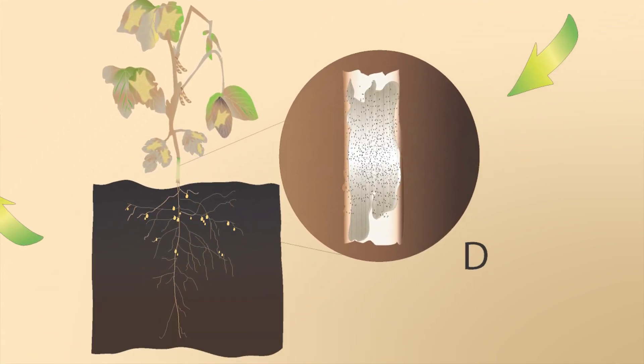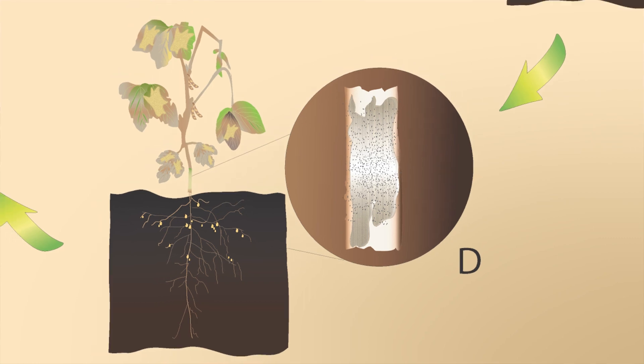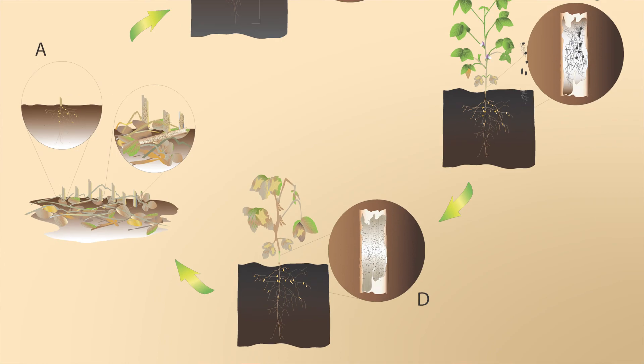Subsequently, new microsclerotia are formed on the plant material. These microsclerotia give the lower stem and taproot tissue a charcoal-like appearance and provide inoculum for the future disease cycle.